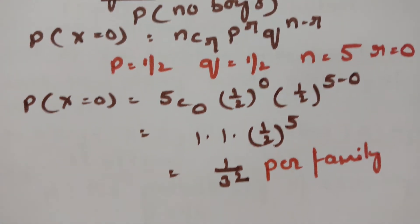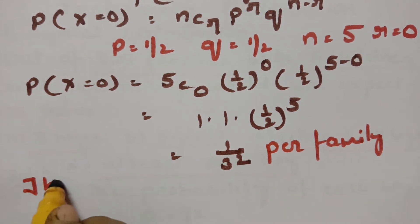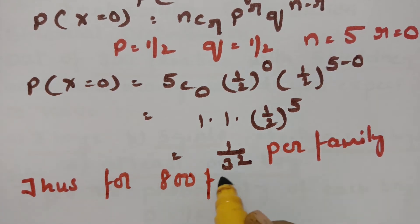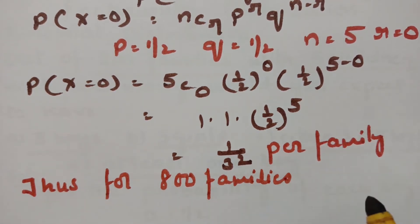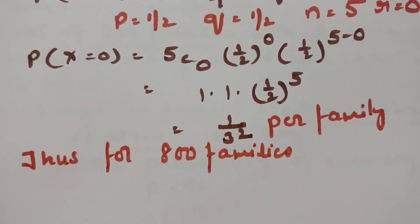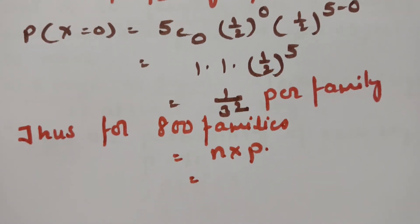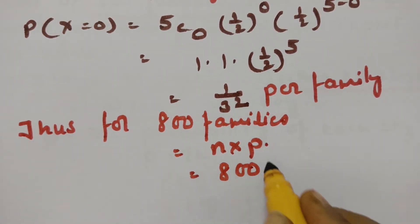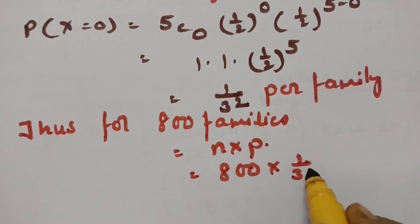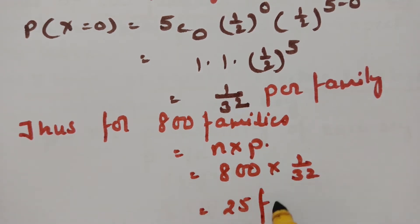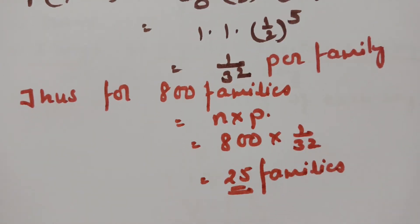For 800 families, the expected number with 5 girls is 800 × (1/32). Cancelling gives 25. So among 800 families, 25 will be expected to have all 5 children as girls.